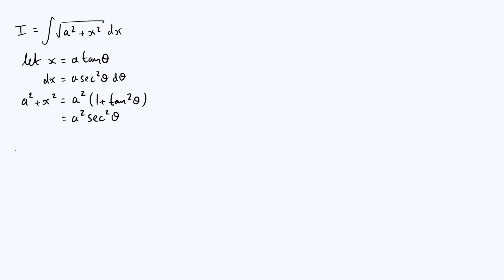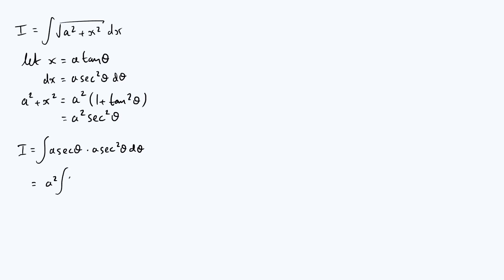Let's substitute those results into our integral, which I've called I. The square root of a squared plus x squared becomes a sec θ, and dx is a sec squared θ dθ. Taking out a factor of a squared at the front, I'm going to leave the integrand as sec θ times sec squared θ rather than combining them into sec cubed θ.